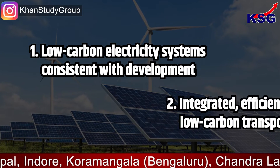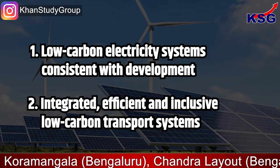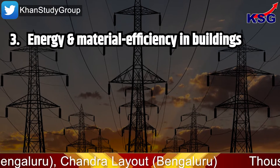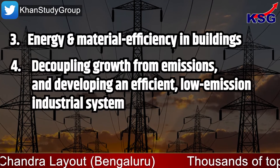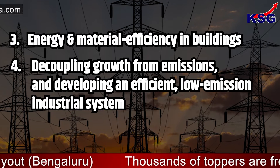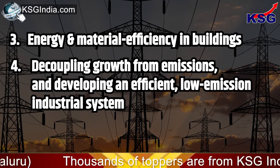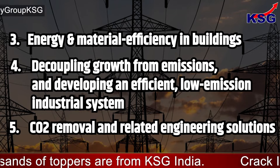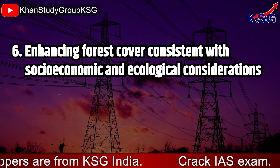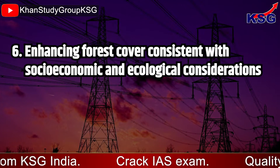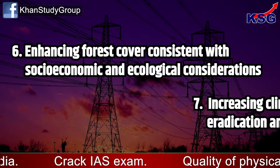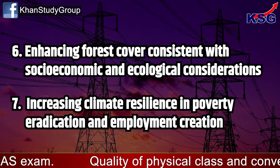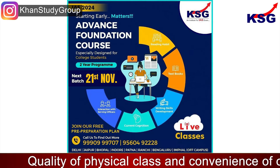India's seven strategies include: low carbon electricity systems consistent with development; integrated, efficient, and inclusive low carbon transport systems; energy and material efficiency in buildings; decoupling growth from emissions; developing an efficient low emission industrial system; CO2 removal and related engineering solutions; enhancing forest cover consistent with socio-economic and ecological considerations; and increasing climate resilience, poverty eradication, and employment creation.